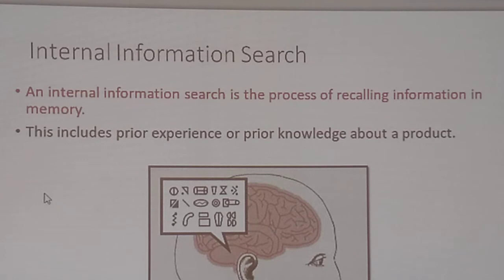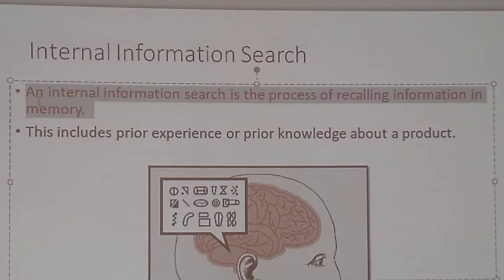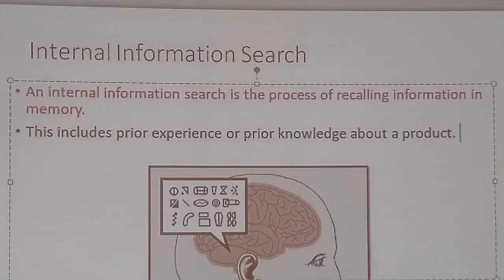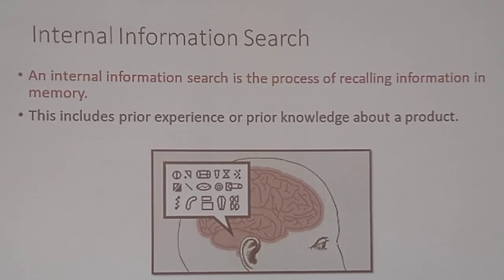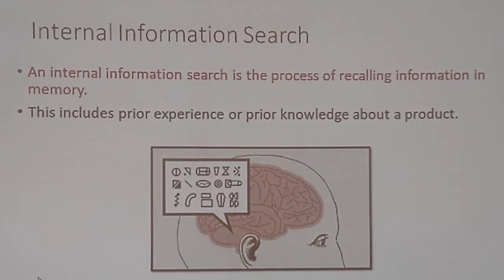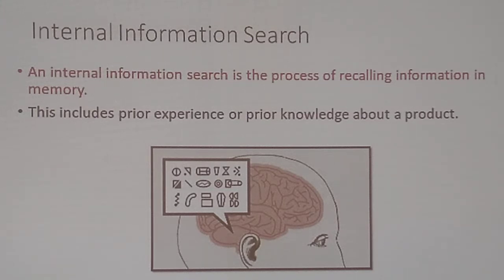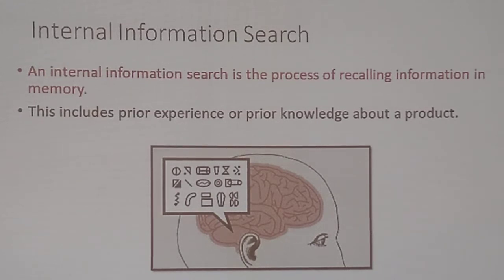Internal information search is a process of recalling information in memory — highlight this first line. This includes prior experience or prior knowledge about a product. Some people are very brand loyal; if they're happy with the brand, they stick with it. If it's working fine for you, why would you change? Or they may have had bad experiences with a product. I used to hate Captain Crunch — it was always advertised as a cereal that stays crunchy in milk, but I always thought of it as getting mushy. So I never buy it because it's just nasty. Even though it says they're supposed to stay crunchy.